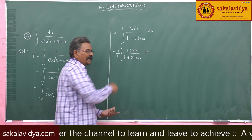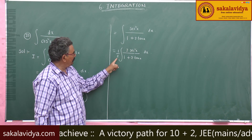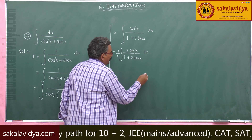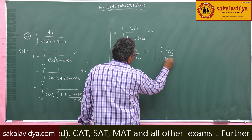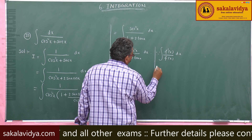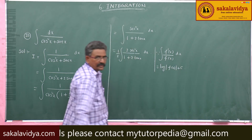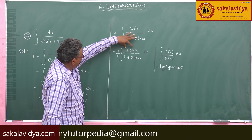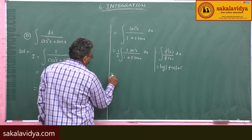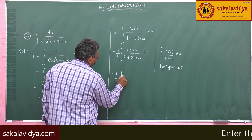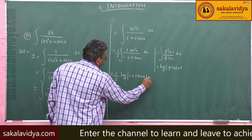This we can write as 1 by 1 plus 2 tan x times 2 secant square x times 1 by 2 dx. The derivative of 1 plus 2 tan x is 2 secant square x. So this is in the form of integral f dash x by f of x dx, which equals log mod f of x plus constant. Therefore this is one half times log mod 1 plus 2 tan x plus constant of integration.